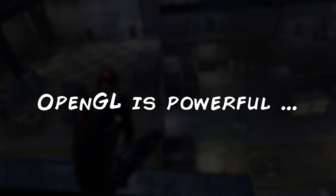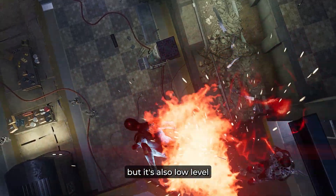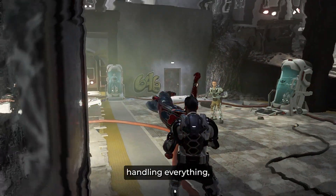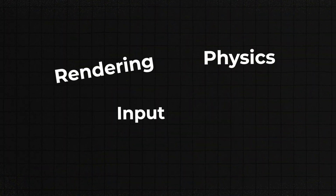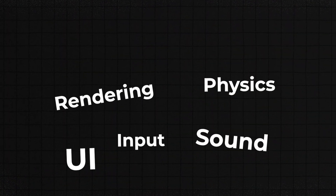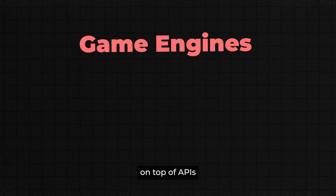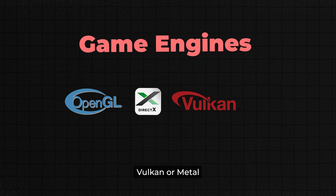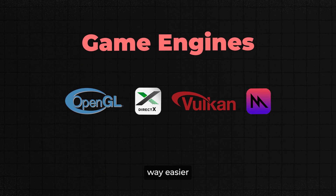OpenGL is powerful, but it's also low-level. Writing a full game with only OpenGL would mean handling everything — rendering, physics, input, sound, and UI — on your own. This is where game engines come in, and they are built on top of APIs like OpenGL, DirectX, Vulkan, or Metal to make development way easier.